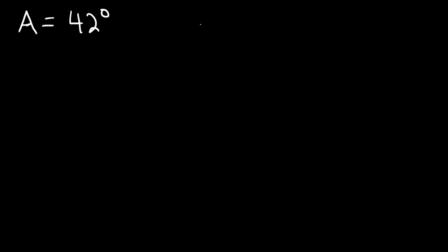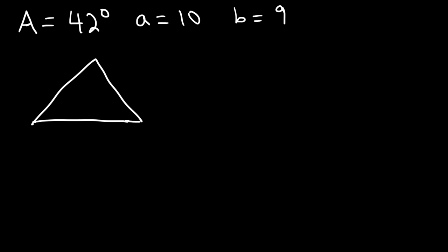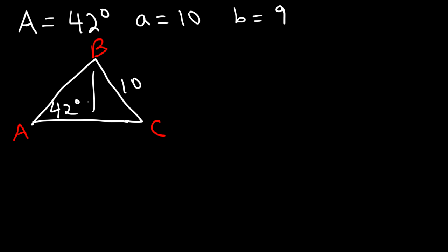Now let's try another example. Angle A is 42 degrees, side A is 10, and side B is 9. Feel free to pause the video and solve the triangle. Let's draw the picture first. We have angle A, B, and C. Angle A is 42 degrees, side A is 10, and side B — across angle B — is 9. So what we have is a side-side-angle (SSA) triangle.